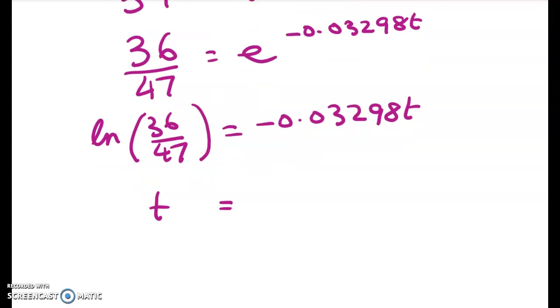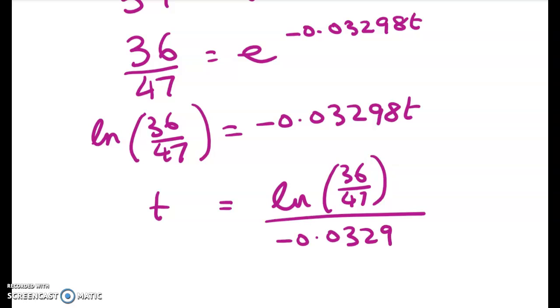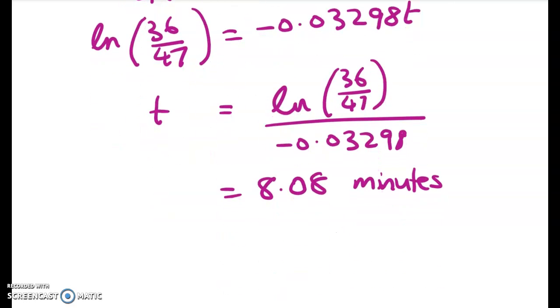And then t works out to be, just leave that like that because it's faster to write. So t works out to be 8.08 minutes. So we should probably work out how many seconds that is. So he can drink the coffee after eight and a bit minutes.